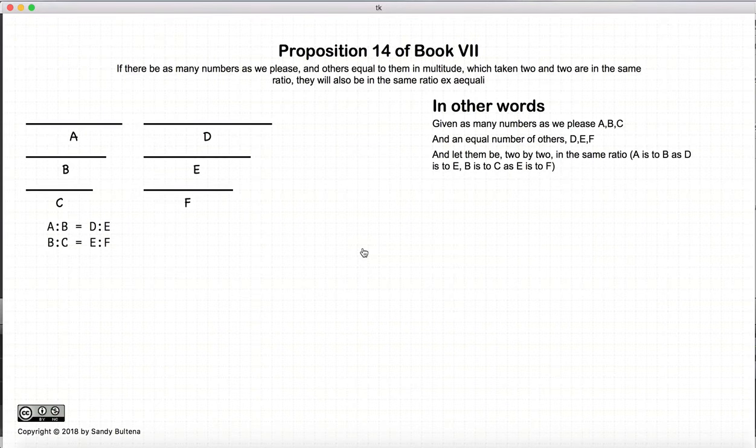Now in this proposition, we're starting with a series of numbers as large as we please, and another series of numbers with the same number of numbers in both series. And if we do the ratios as he describes 2 by 2, so if A is to B is equal to the ratio of D to E,